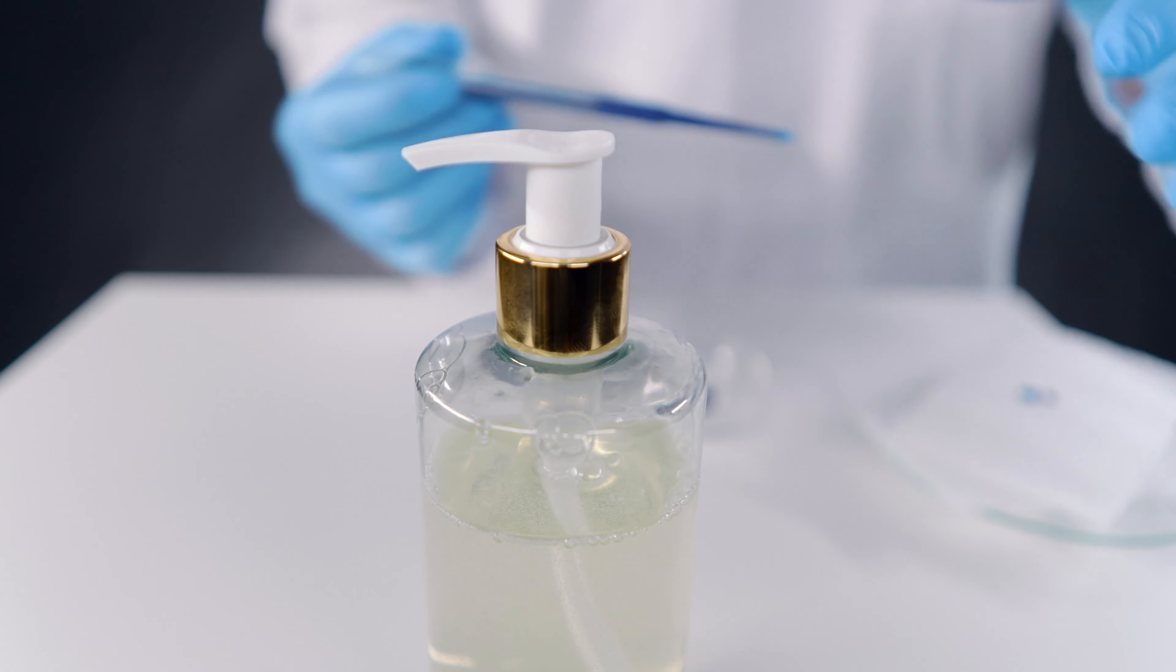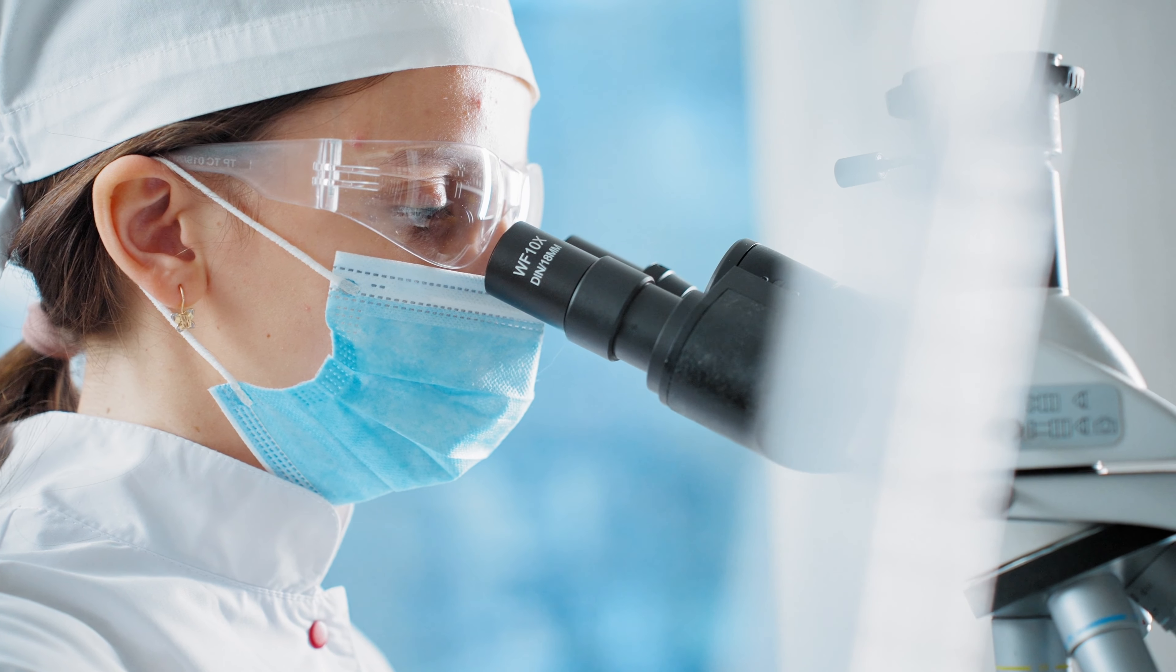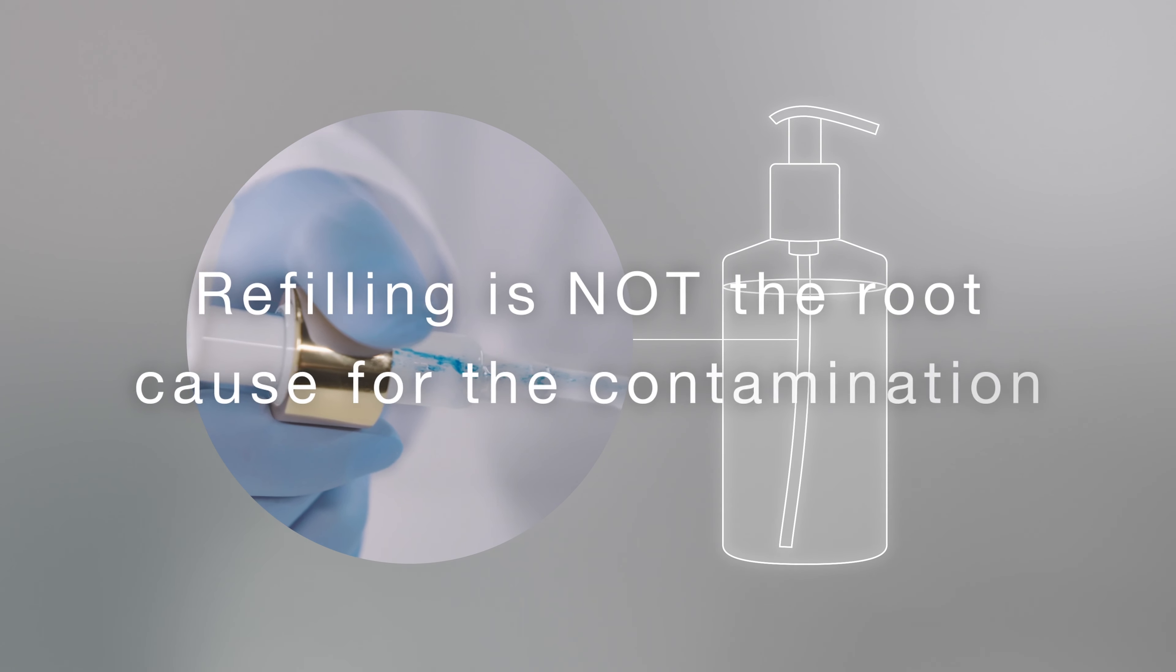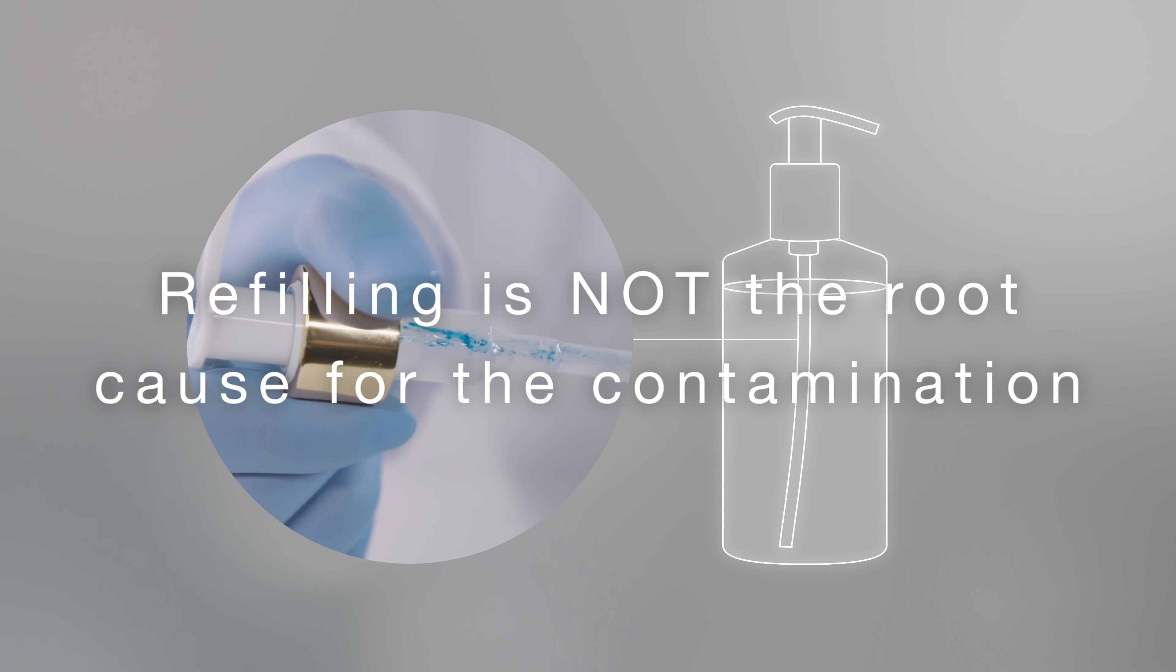So, how did the bacteria get into the refillable pump dispensers? Initially, refilling was suspected as a source of contamination. The institute's researchers therefore injected a limited number of bacteria into the dispensers to replicate contamination during refilling. It was proven that such bacteria will be contained by the liquid's preservative system, and that refilling is not the root cause for contamination found in the samples.